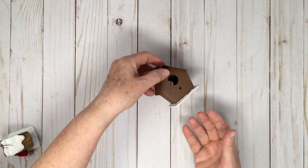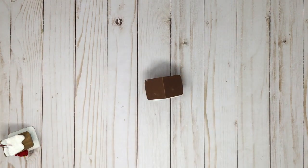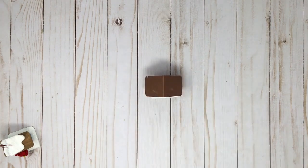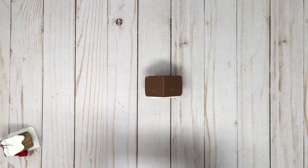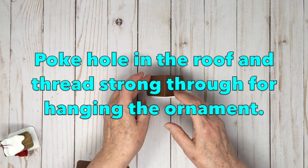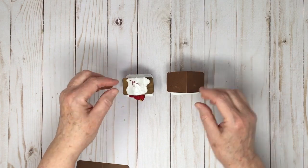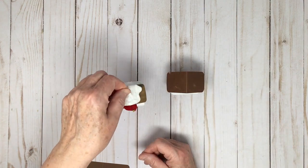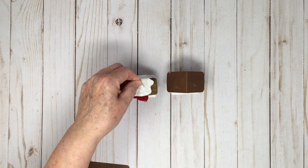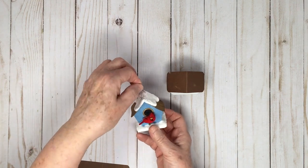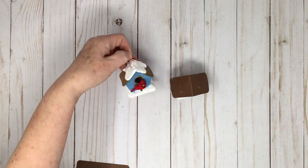Oh and then, you can punch a hole, you can punch a hole before you glue the roof on if you remember. If you don't I just use a needle and thread and just put embroidery thread through. I made these really short so they wouldn't dangle so much.